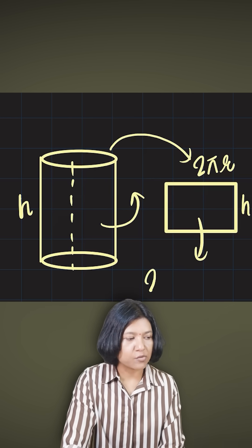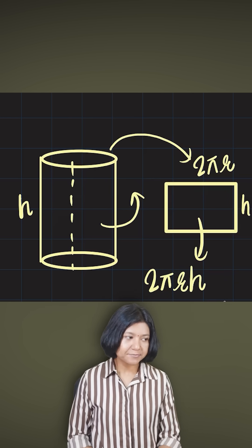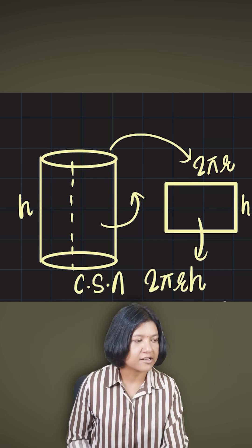The area of a rectangle is length times width. So I'm going to do the same thing: 2πrh. So it's very interesting. This is the formula for curved surface area of a cylinder.